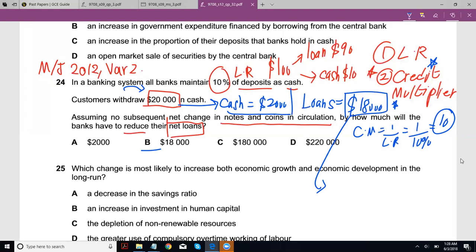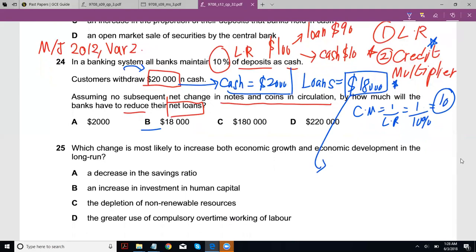So it gets loaned out, someone else takes it, someone deposits it in a bank, it's loaned out again, and so on. The eventual result here is that your net loans become the loan that one bank would make times the credit multiplier. So that is $180,000 are loaned out.